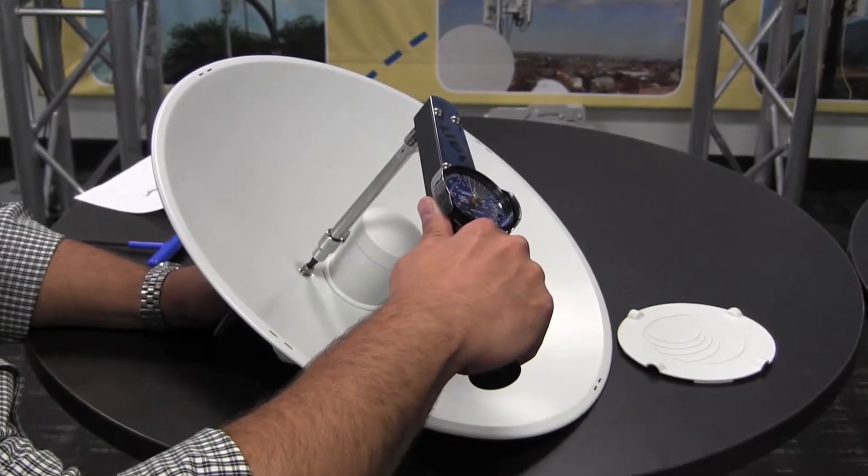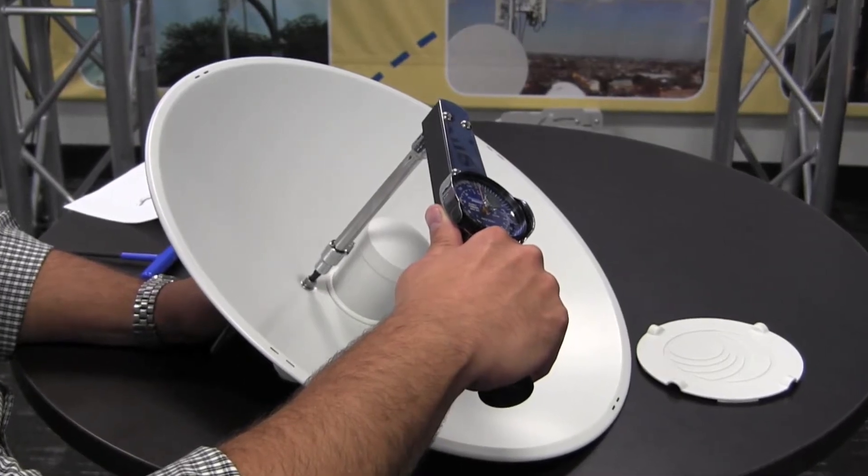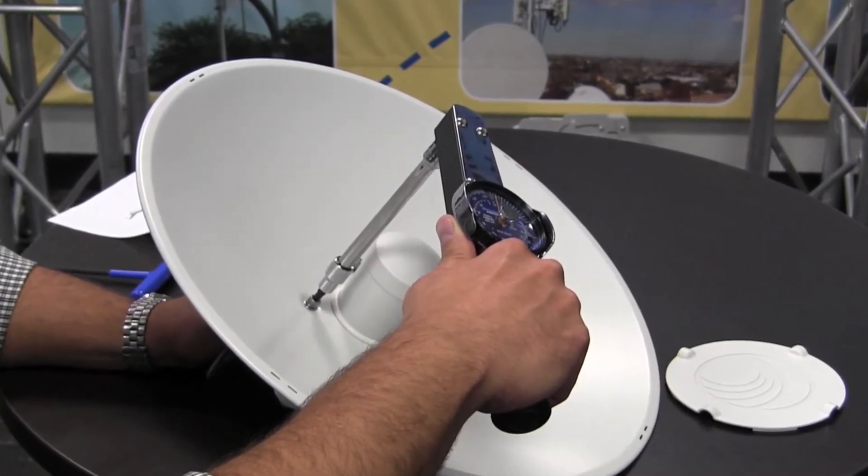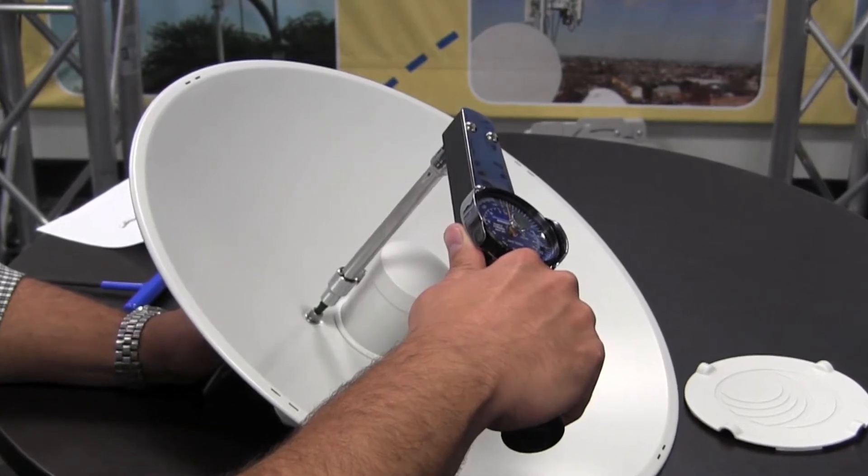After securely fastening the feed to the assembly, tighten up the four bolts to 10.8 Nm using a 5 mm Allen wrench.